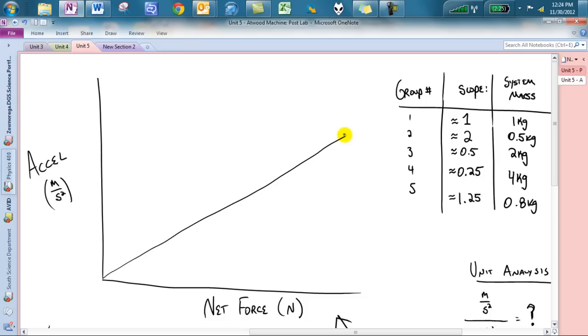The biggest thing about this lab though is taking a look at the slope and the y-intercept. First off, the y-intercept should make sense, it should be 0 meters per second squared because without a net force, should you be accelerating? No. We learned that from last unit, so that's good.